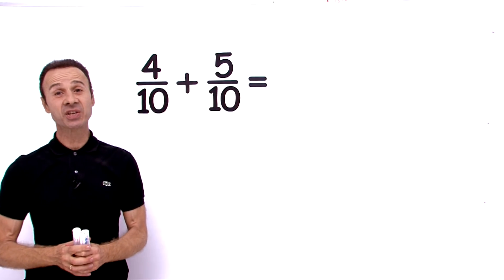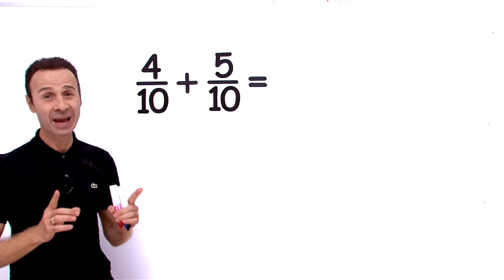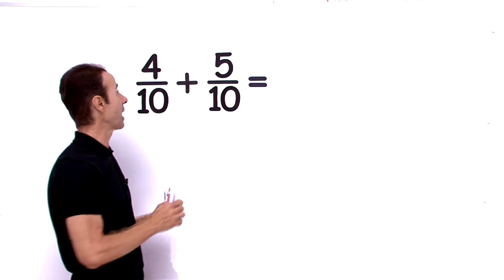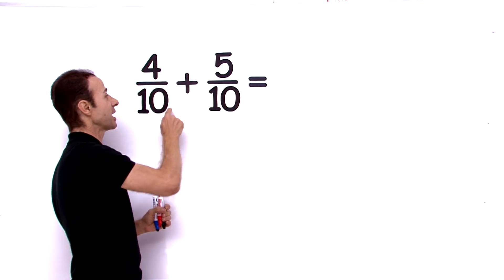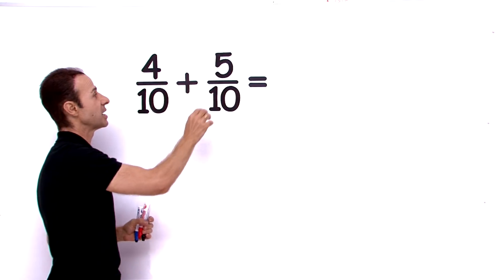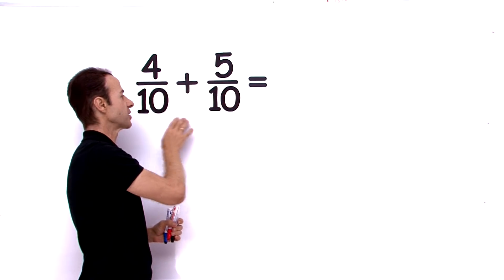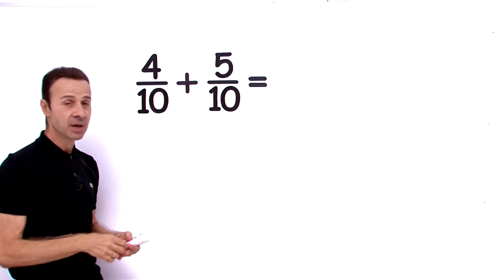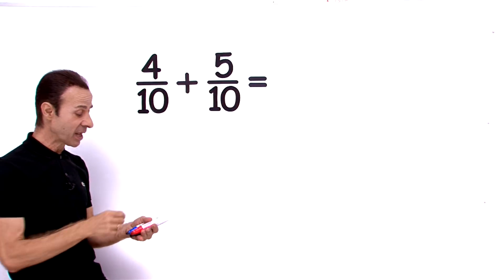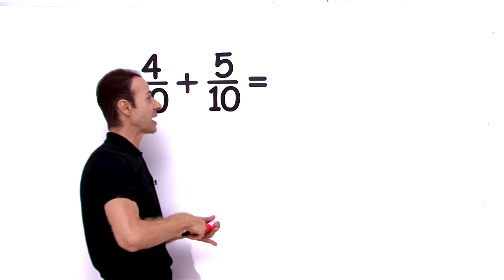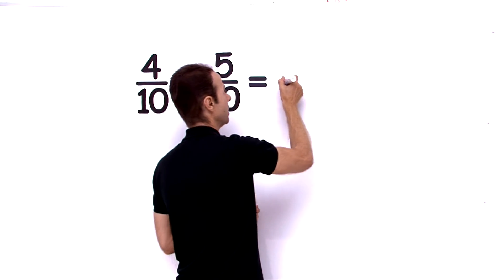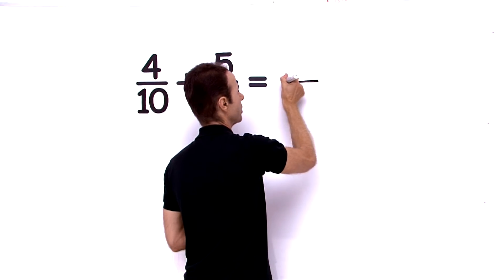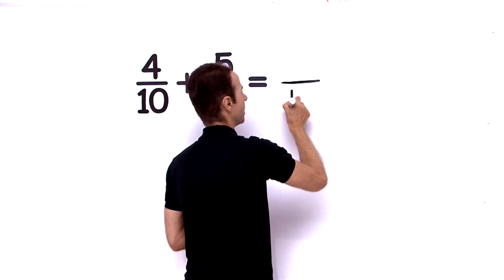We are adding fractions with the same denominator. We have 4 tenths plus 5 tenths. Both denominators are the same, so when the denominators are the same, the answer is going to have the same denominator.